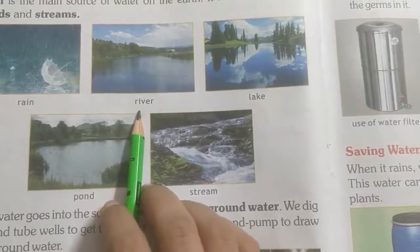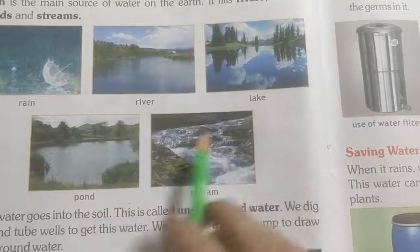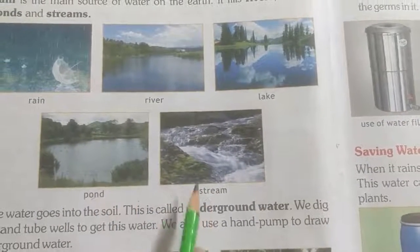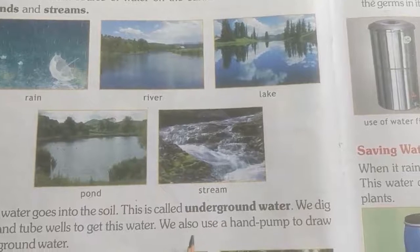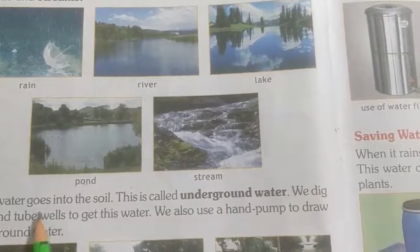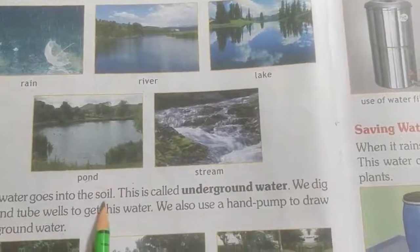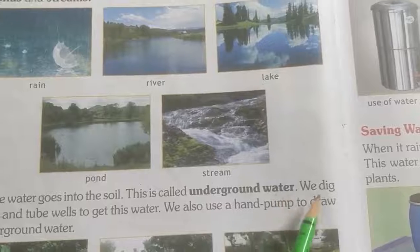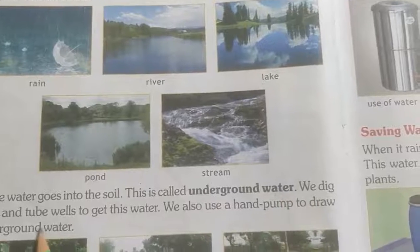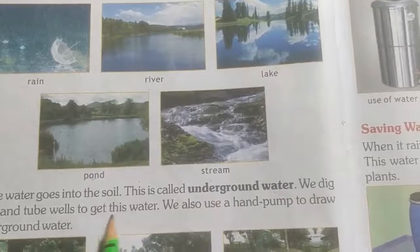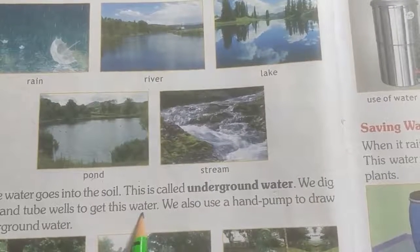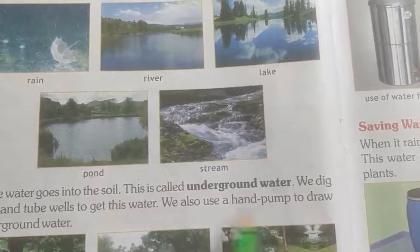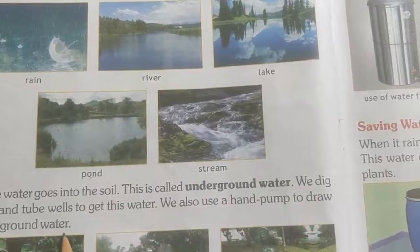Rain, rivers, lakes, ponds, and streams — these are the sources of water. Some water goes into the soil; this is called underground water. We dig wells and tube wells to get this water. We also use a hand pump to draw underground water.